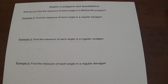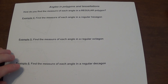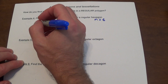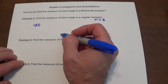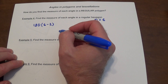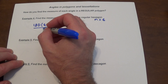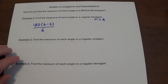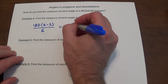If you have a regular polygon, you can find the measure of each individual angle. Since all angles are congruent, you divide the total angle sum by the number of angles. For a regular hexagon where n equals 6, we do 180 times (6 minus 2) divided by 6, which is 180 times 4 divided by 6, giving each angle a measure of 120 degrees.